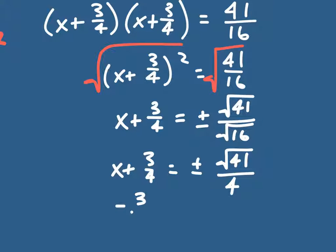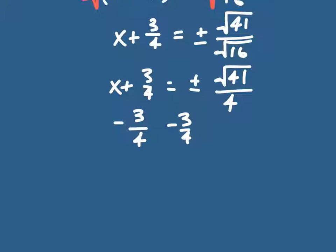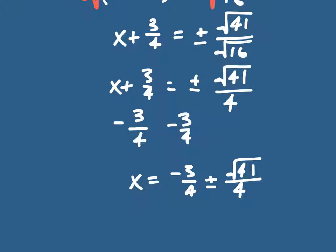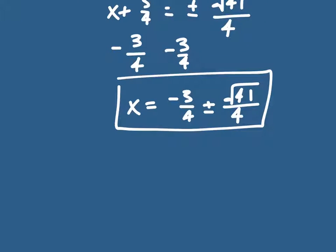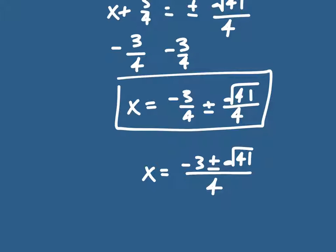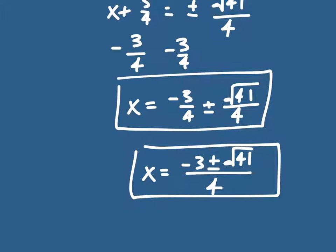Then I subtract three-fourths from both sides and get x equals negative three-fourths plus or minus the square root of 41 over 4. Since I have a common denominator, I can also write this as x equals negative 3 plus or minus the square root of 41, all over 4.